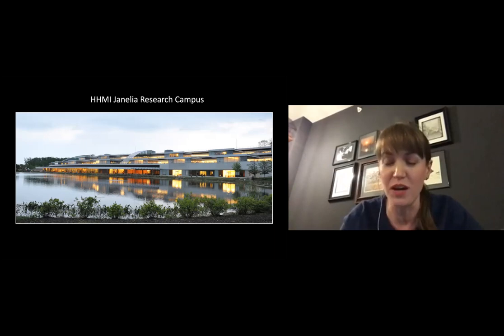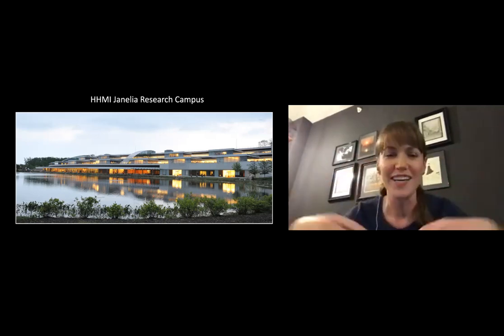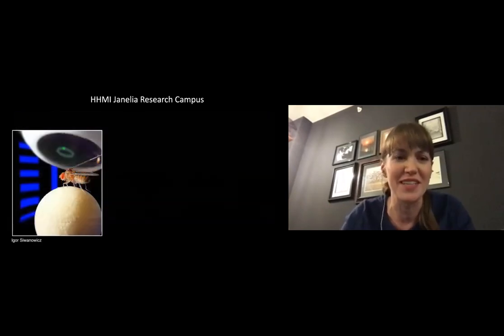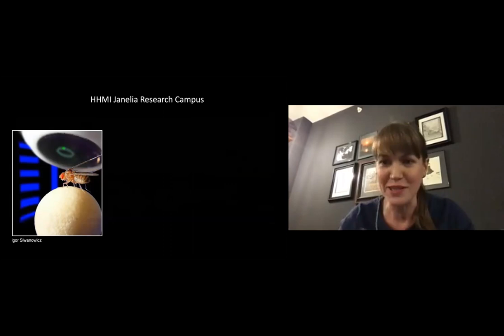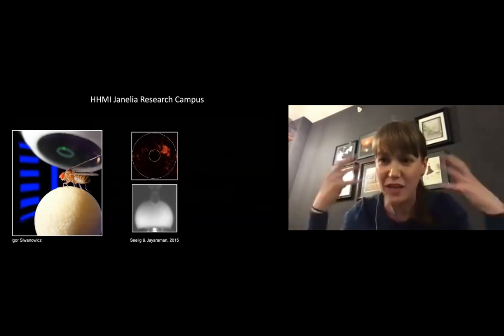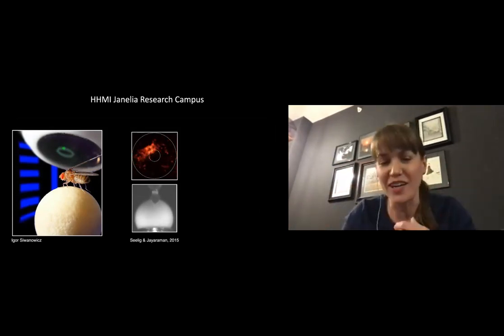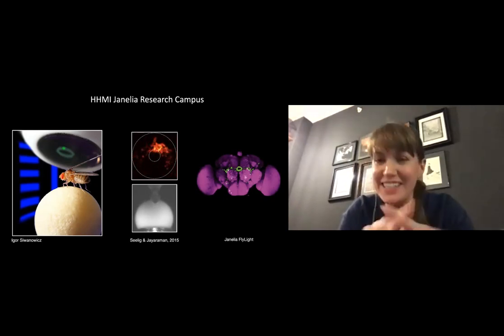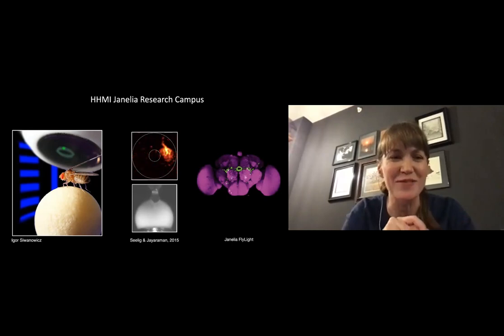And so one of the things that we're working to understand is how the brain gives rise to flexible behavior. So how animals build internal models of the world, how they use these models to make decisions and to guide actions. And so one of the ways that we approach these problems is to develop virtual reality video games for animals to play, animals like fruit flies. And then we look inside the brain of these animals while they're playing these games. So here you're looking at neural activity in a fruit fly while it's navigating in this VR setup. And we try to understand how this activity relates to the models that flies are building as they're learning new things. And then we try to connect these to the underlying neural circuits, the neurons and connections that give rise to this. So this still to me feels like science fiction, even though this is what I work on every day.